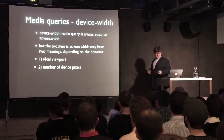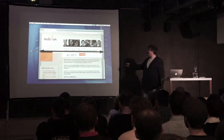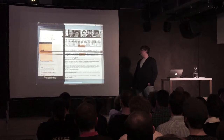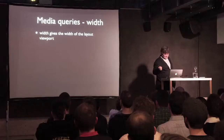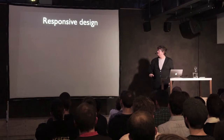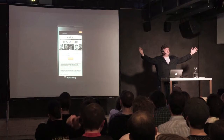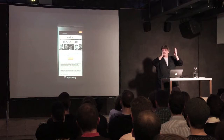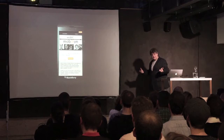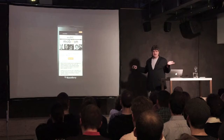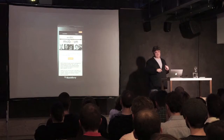Instead, use the width media query. Width tells you how large the layout viewport is — exactly what you want to know. You use the meta-viewport to make the layout viewport equal to the ideal viewport so it fits your device nicely, and then you use the width media query to find out how wide that layout viewport actually is — and then you issue specific orders to your layout: don't show the sidebar on the right, show it at the bottom, and so on. That is why you should use the width media query and not device-width.